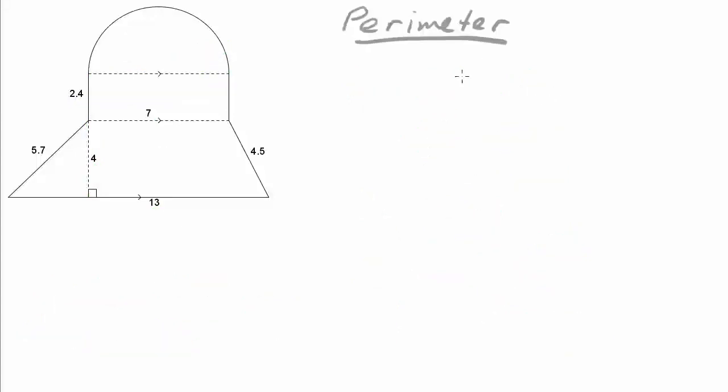Now the next challenge that we'll be taking on is to calculate the perimeter of our composite shape. Remember the perimeter is the distance all the way around the outside.